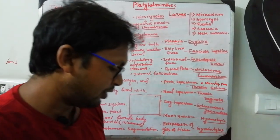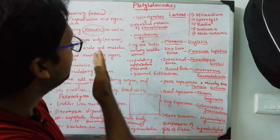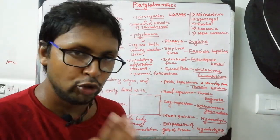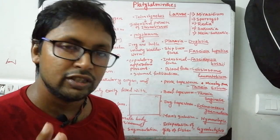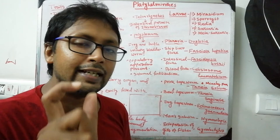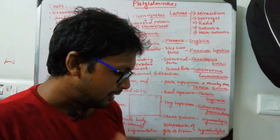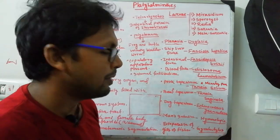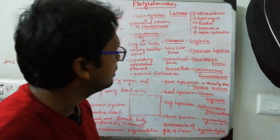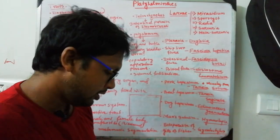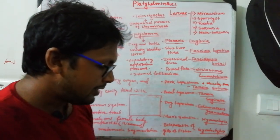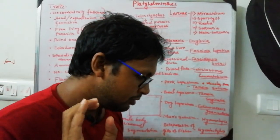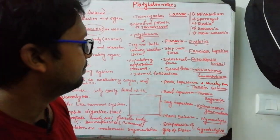Diphyllobothrium is the fish tapeworm and has two intermediate hosts: Cyclops and fish, with human beings as the definitive host. So Cyclops and fish are two intermediate hosts in case of the fish tapeworm Diphyllobothrium. Important terms to remember: Proglottids, Rostellum, Hooks, Sucker, Acetabulum, and the names Diphyllobothrium, Opisthorchis, and Schistosoma haematobium. Thank you.